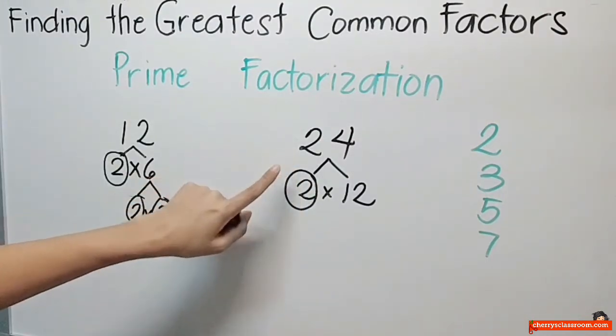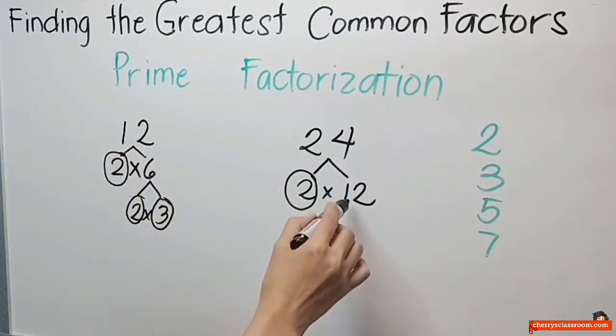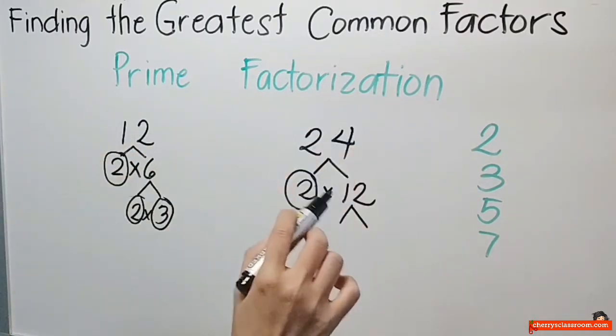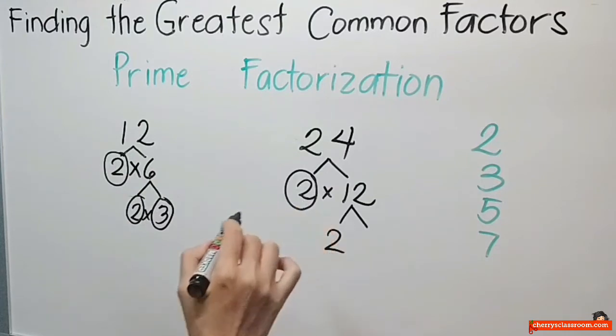Bakit ko binilugan ang 2? Kasi ang 2 ay prime na. So, wala na siya. Hindi ko na siya iisipin. Dito na ako ngayon tututok sa 12. Anong number ang i-divide ko sa 12? So, prime number ang nahanap natin. 2, 3, 5, or 7. So, pwede mong sagot ang 3, pwede rin ang 2, di ba? So, pili ka lang ito na ang bahala. So, this time, ang pinili ko ay 2.